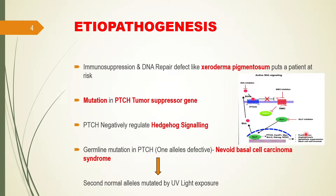Hedgehog signaling, as you can see in this diagram, leads to cell proliferation, new blood vessel formation, angiogenesis, stem cell renewal capacity, and apoptosis suppression. So by hedgehog signaling activation there will be proliferation of cells, new blood vessel formation, evasion of apoptosis, and stem cell renewal capacity - which is one of the molecular bases of cancer formation. If hedgehog signaling is not regulated by PTCH, then cancer can develop. In this particular cancer there can be germline mutation in the PTCH tumor suppressor gene, so hedgehog signaling will not be regulated and the patient will develop cancer.